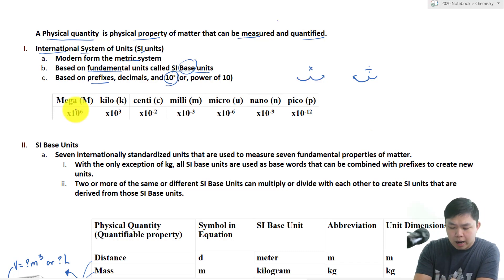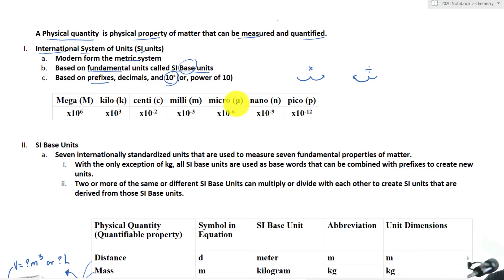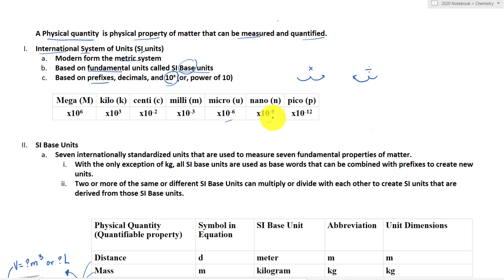We have some common prefixes here, and we are going to learn all about them later. The powerful aspect of SI units is that we are able to use different prefixes, and those different prefixes represent different values as powers of 10.